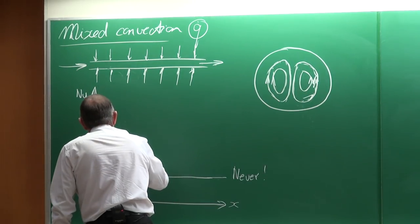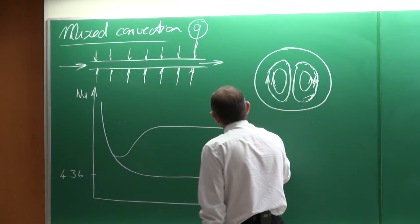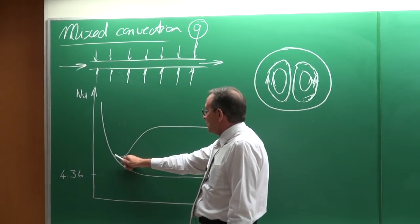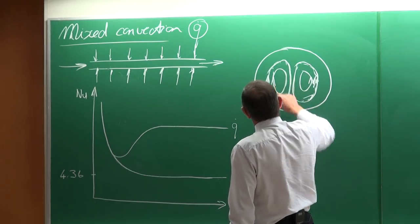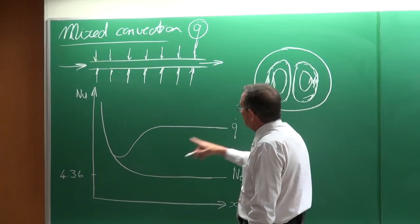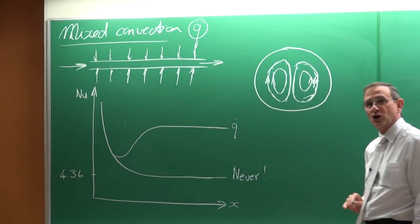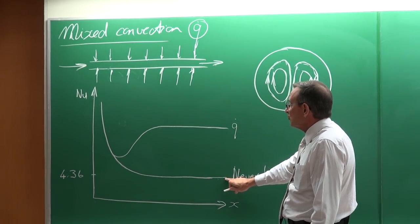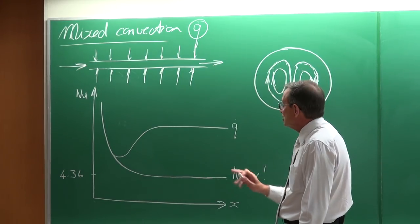That means that this circulation is going to become stronger and stronger as you go downstream in the tube, up to the point where the boundary layer that starts increasing begins decreasing again. And the result is you get something like this for a specific case of a constant heat flux. It will break away from the forced convection line, develop more and more until fully developed, and these values typically can be about three times higher than 4.36.